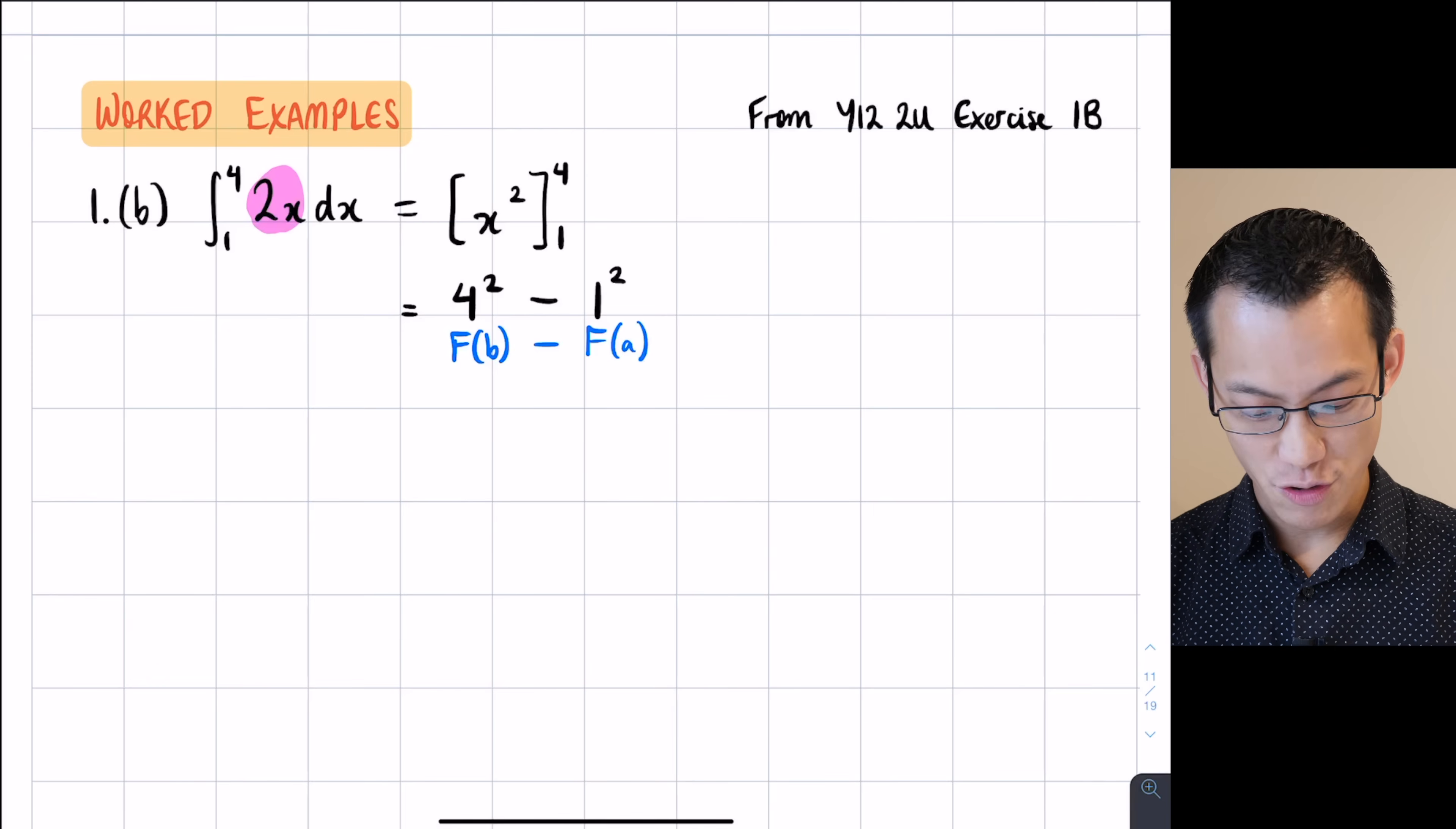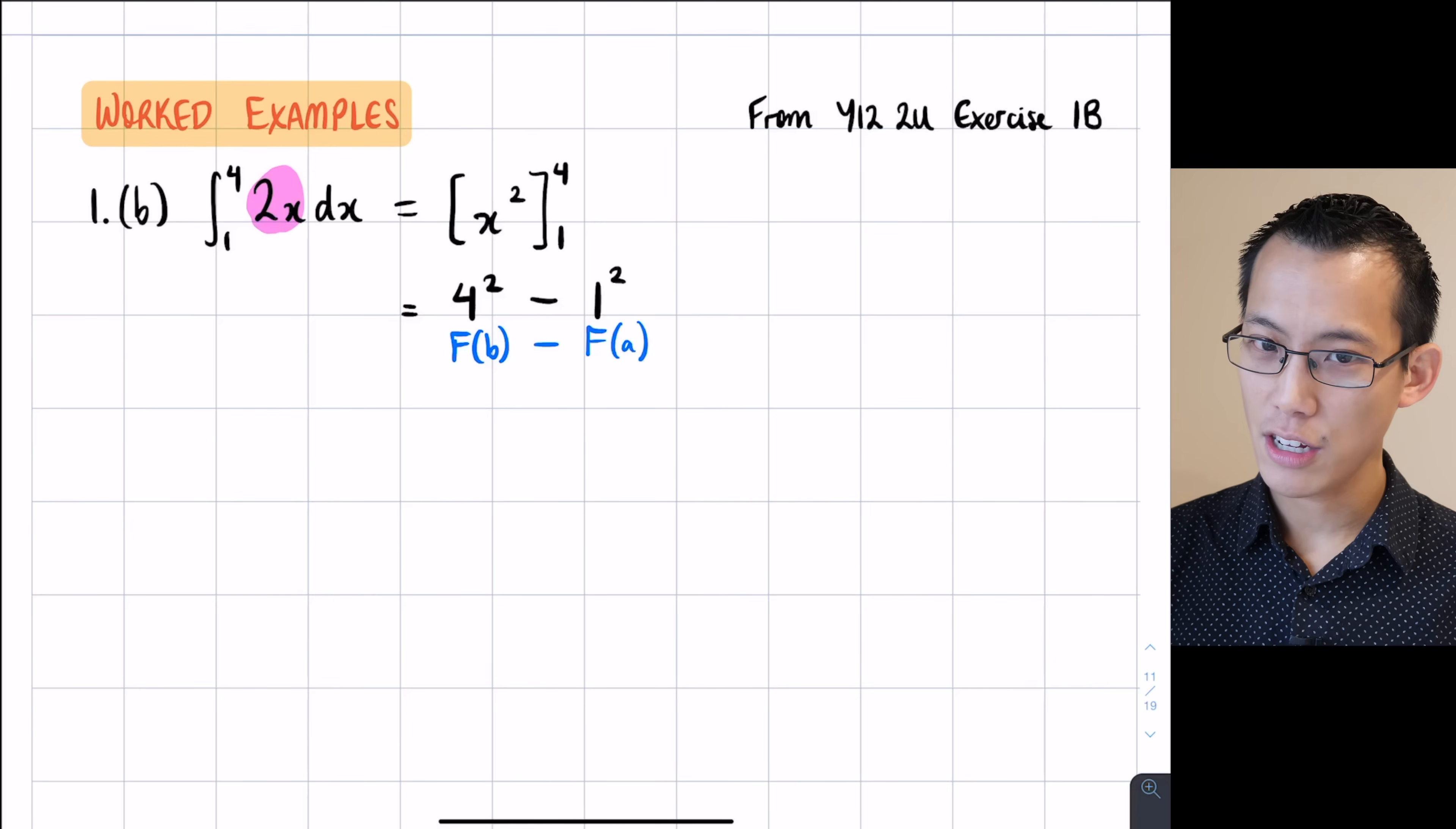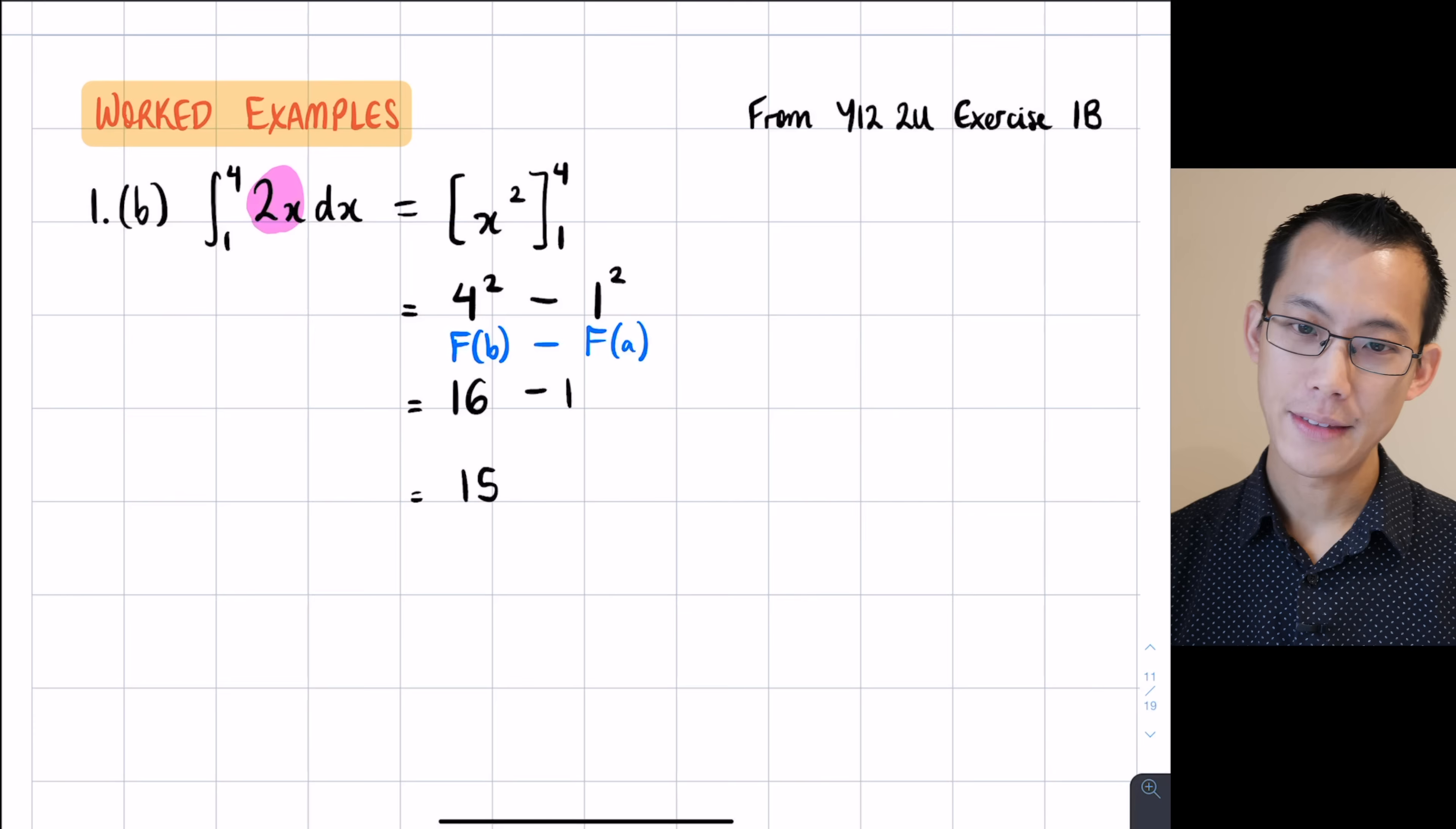Now, I know a lot of you will be like, I don't need to write 4 squared and 1 squared. I know what those are equal to. That's fine. But I'm just going to say to you right now, this substitution step is going to save you a lot in the future. We're obviously not going to be dealing with just simple functions like this. Sometimes they're quite terrible and messy. And if you get something wrong and just simplify it in your head, you have no way to work out what's gone wrong.